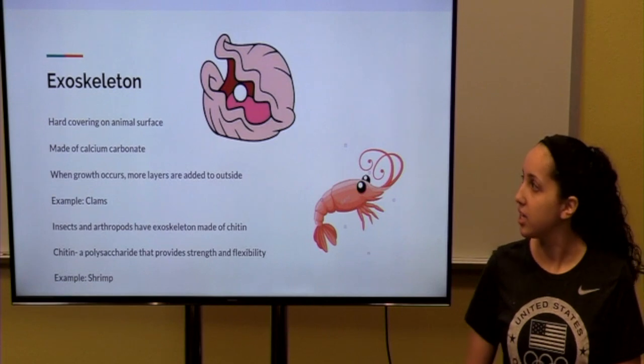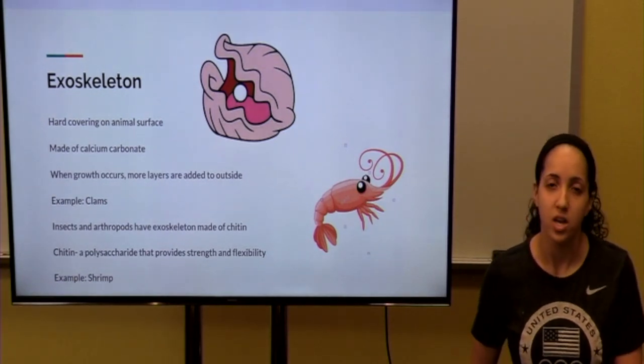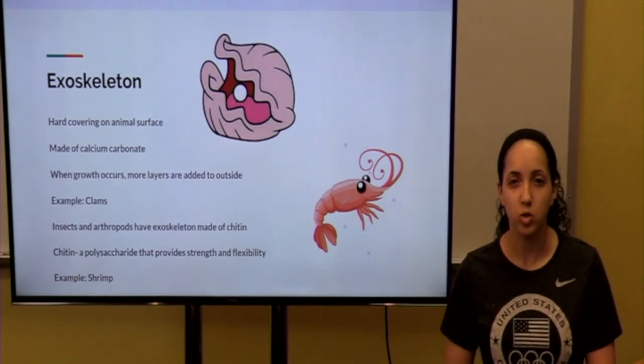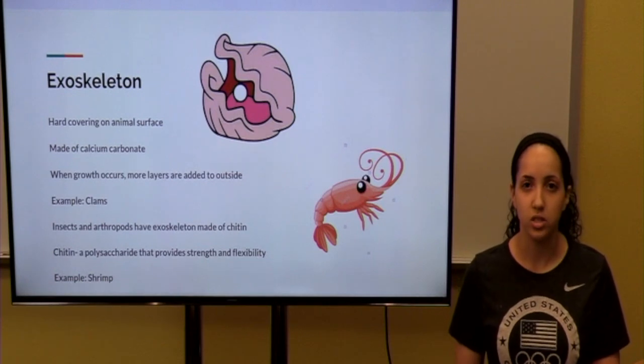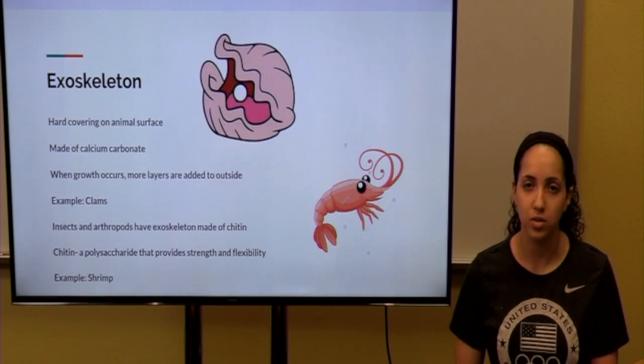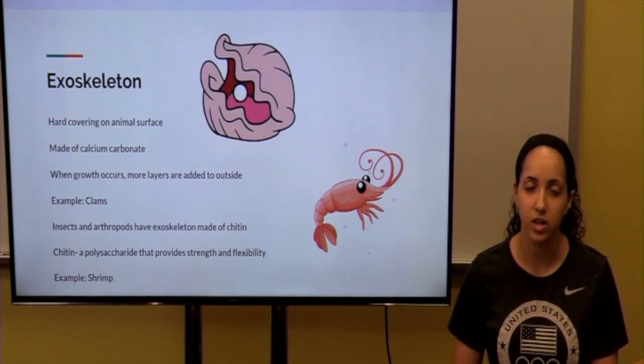The second type of skeleton is the exoskeleton. There's an exoskeleton made of calcium carbonate, which is in clams. And there's also an exoskeleton made out of chitin, that is a polysaccharide, and an example of an animal with this is shrimp.